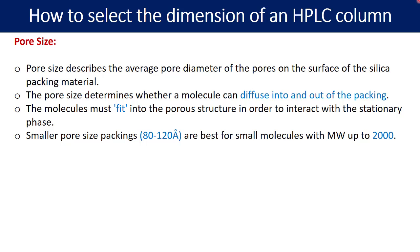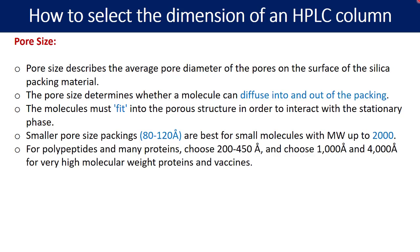The smaller pore size packing, example 80 to 120 angstrom, are best for small molecules with molecular weight up to 2000 daltons. But in case if you have bigger molecules like polypeptides and proteins, then you may choose the wider pore size columns like 200 to 450 angstrom. And if the molecules are very high in their size, then you can go for pore size like 1000 to 4000 angstrom unit.